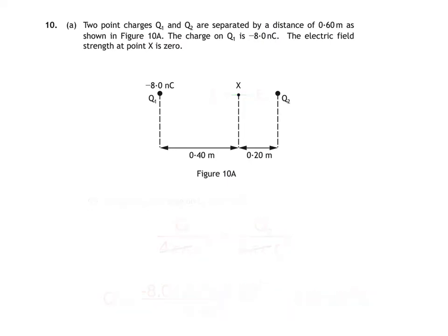Next up, it's part 3 of the question. Here we're asked to calculate the electrical potential at point X. It's important to remember that unlike electric field strength, electrical potential is a scalar quantity. Electrical potential at a point is the work done in bringing unit positive charge from infinity to that point.